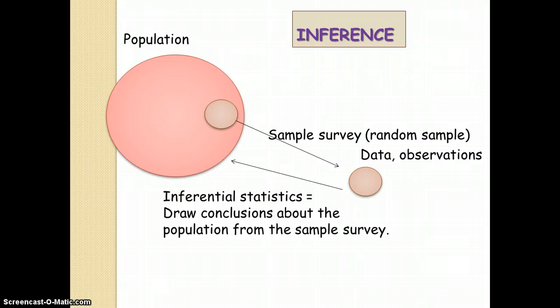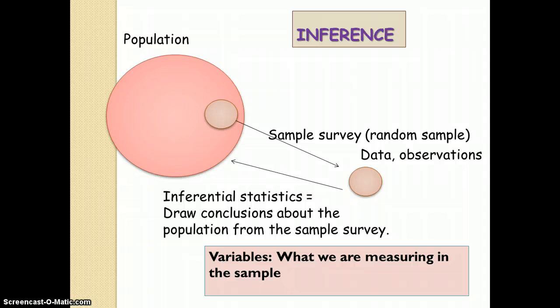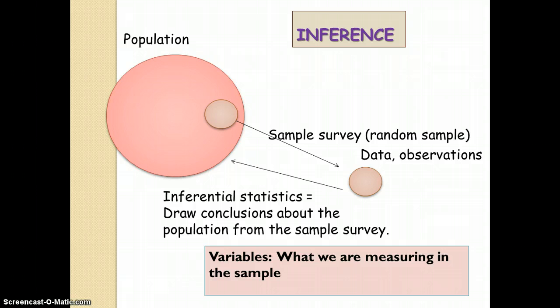Then we draw conclusions about the population from the results we have in the sample. The variables are what we are measuring on the individuals in the sample. It can be questionnaires or some more formal measurements, for example health data.